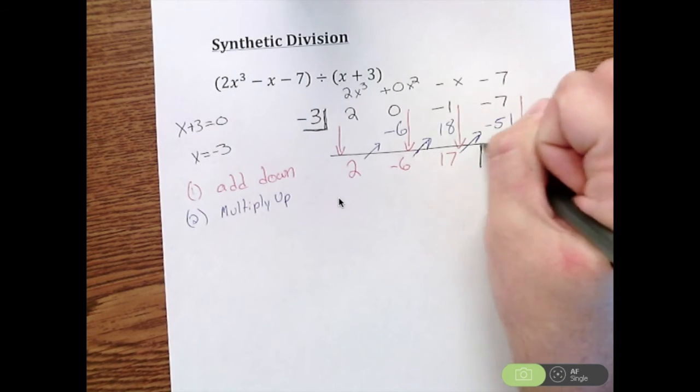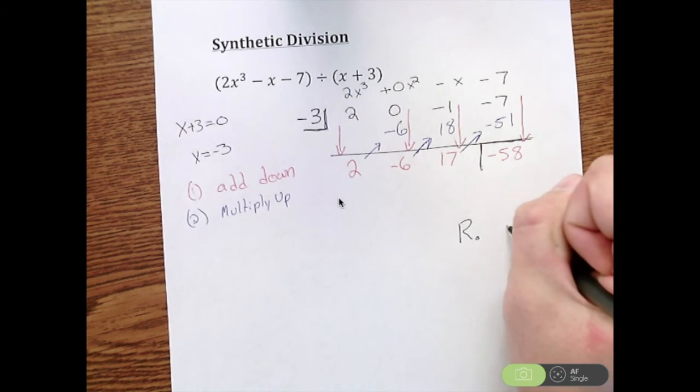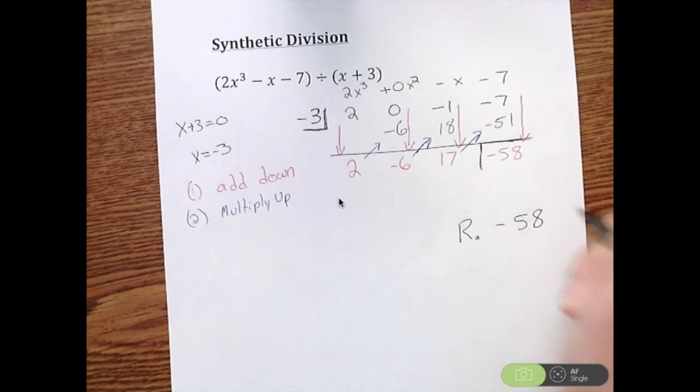What's going to happen is that last number that you create down there, that is your remainder. So for my answer I know my remainder is negative 58.